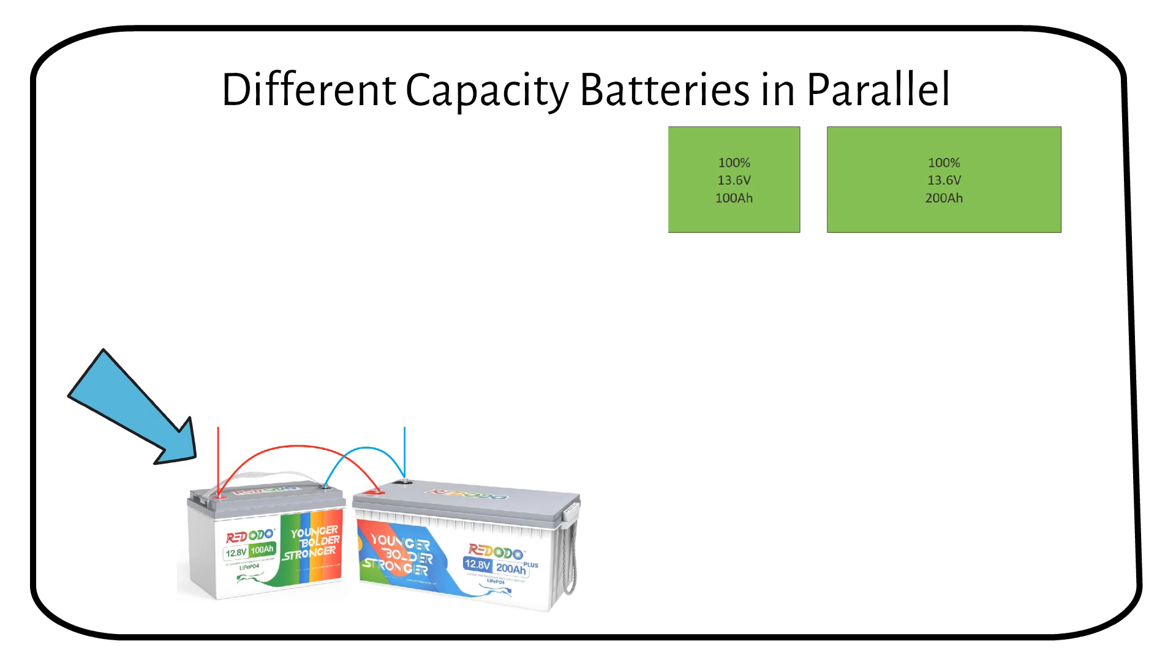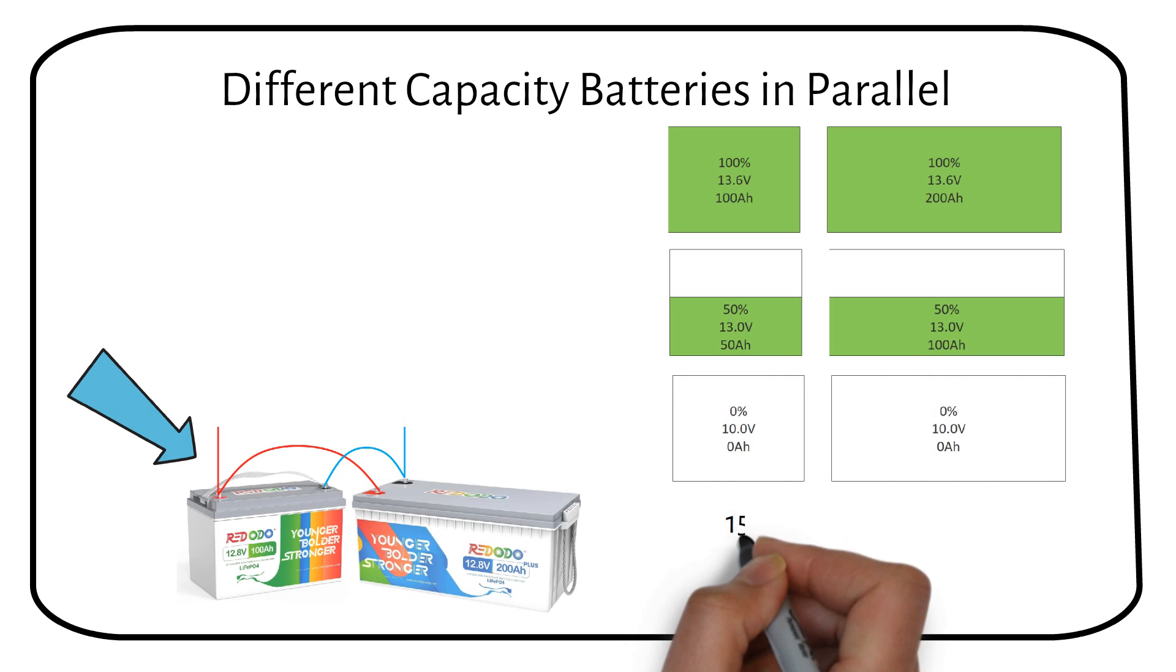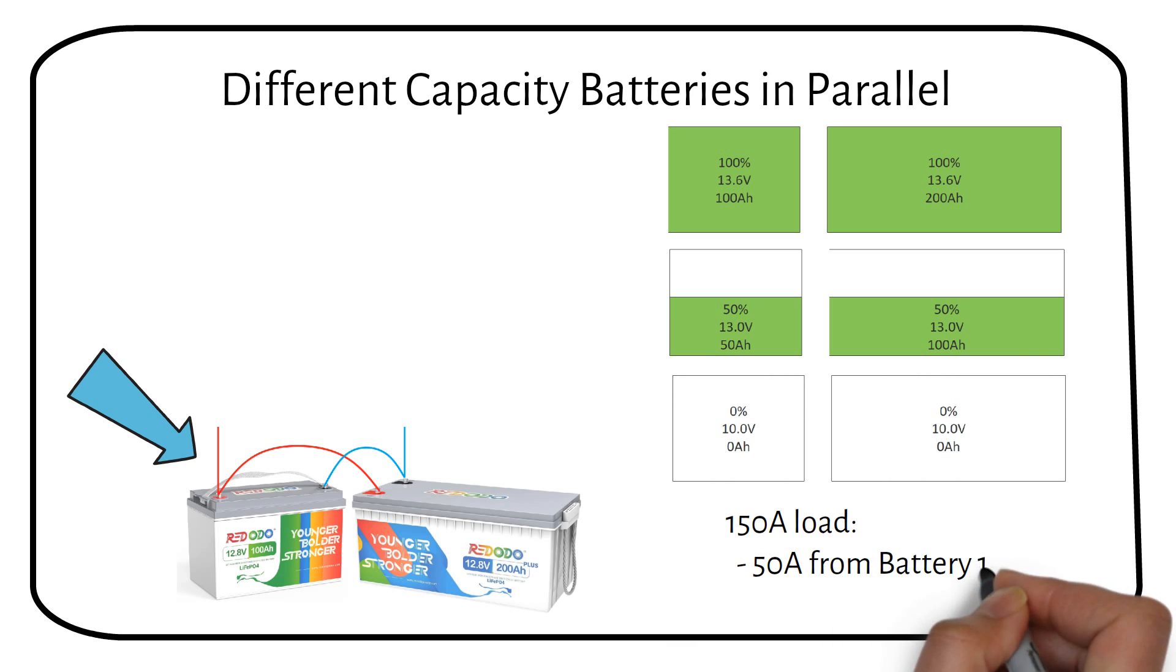If the battery is 100% charged, both batteries are at 13.6V. If the battery reaches 50%, battery 1 will have delivered 50Ah and battery 2 100Ah. If the battery drops to 0%, then the small battery has given 100Ah and the large battery has given 200Ah. Battery 2 will have given twice the current than battery 1. If we have a 150Ah load on it from an inverter, battery 1 will draw 50A while battery 2 will draw 100A.